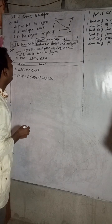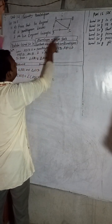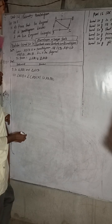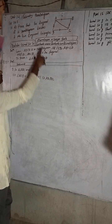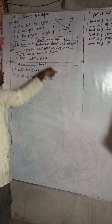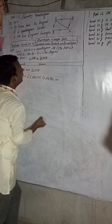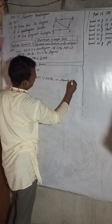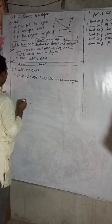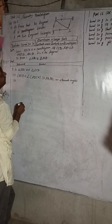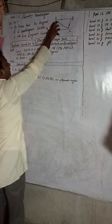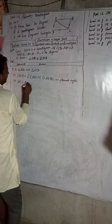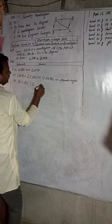Step 1: Angle ACB equals Angle CAD. The reason is AD is parallel to BC, and AC is the transversal — so these are alternate angles. Step 2: AC equals AC. This side is common to both triangles. The reason is: common side.